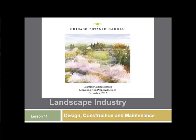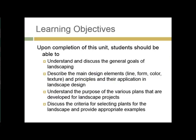The three parts of this lecture break down along those lines. When you're done with this unit, you should be able to understand and discuss the general goals of landscaping, describe the main design elements of line, form, color, and texture and the principles underlying them, understand the purpose of the various plans used to develop landscape projects, and discuss the criteria for selecting plants to be used in the landscape and provide some good examples of those.